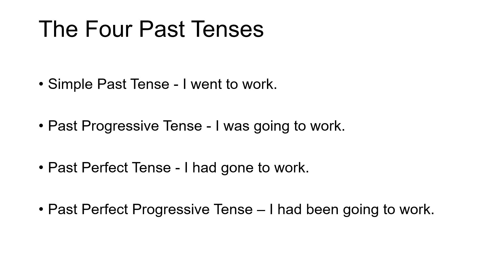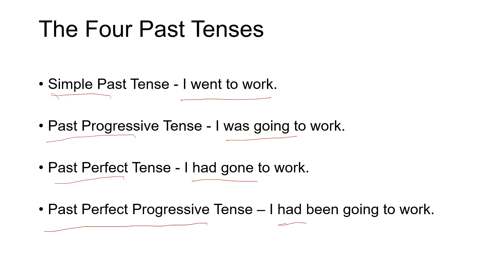There are four categories of past tense. Simple past: 'I went to work.' Past progressive: 'I was going to work.' Past perfect tense: 'I had gone to work.' Past perfect progressive tense: 'I had been going to work.' These four categories are based on whether the action was completed in the past, as in simple past and past perfect tense, or it was an ongoing process.